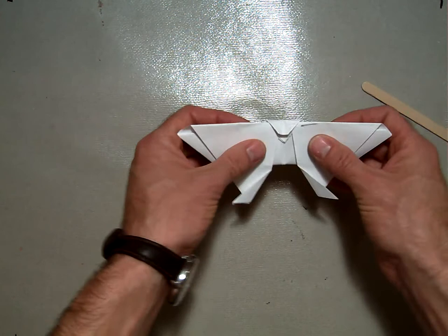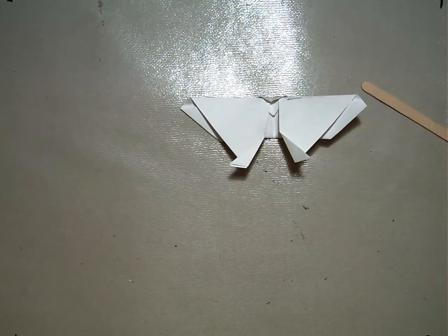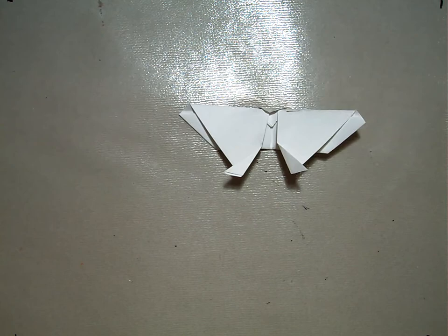And if you want to go even further you can just bend it a little bit like this and it'll have its wings stay up. So that is how you fold an origami butterfly. See you next time.